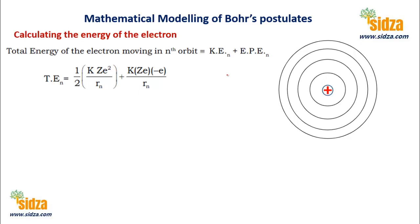According to Bohr, the atom contains a very small nucleus in the middle with stationary orbits around it. What is the energy of those orbits? The energy of an electron in an orbit is basically the sum of two energies: the kinetic energy of the electron and the potential energy.